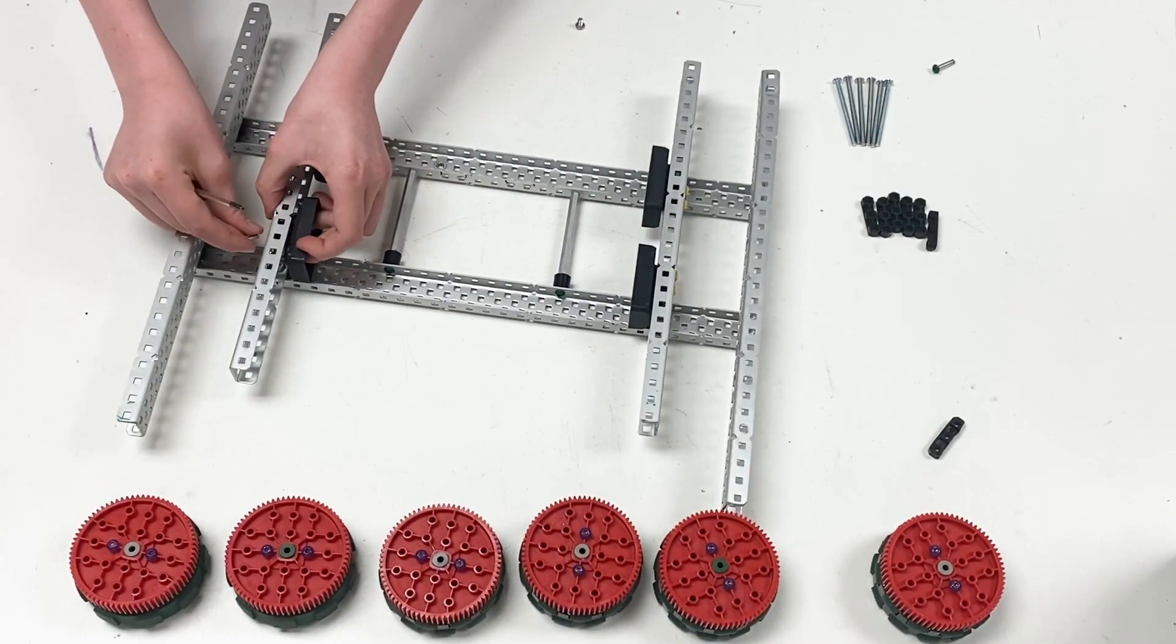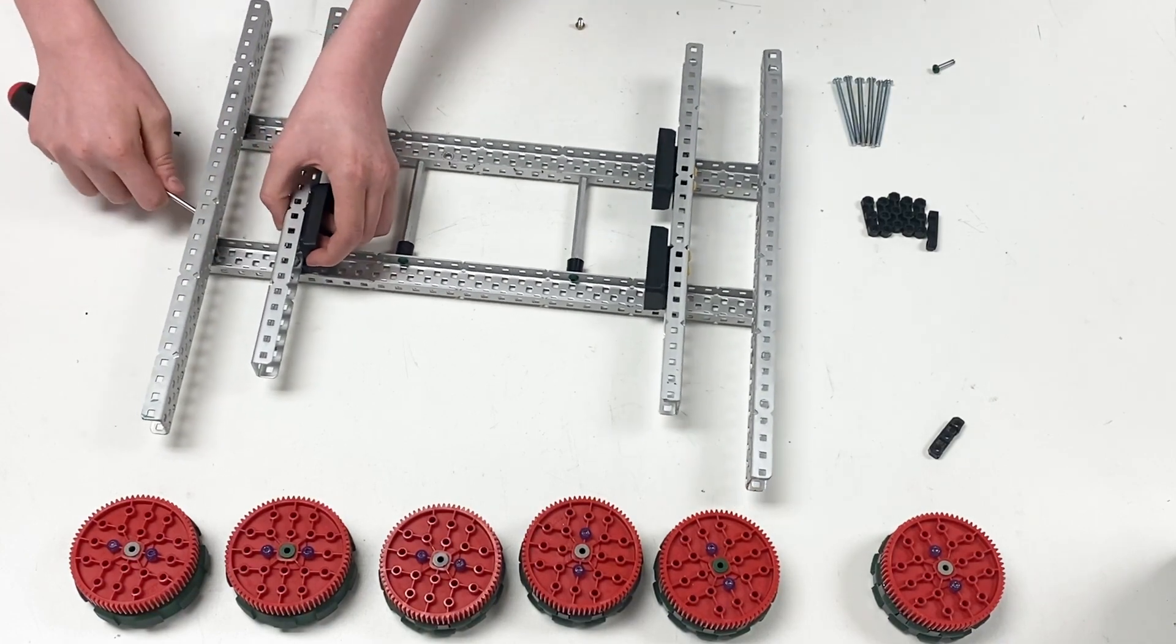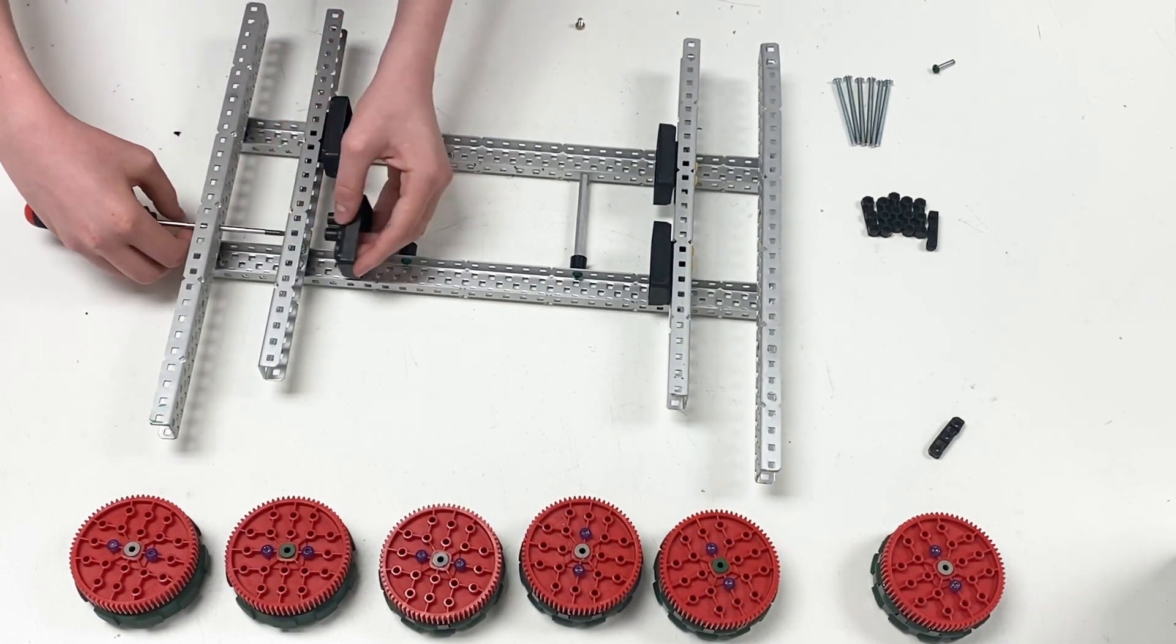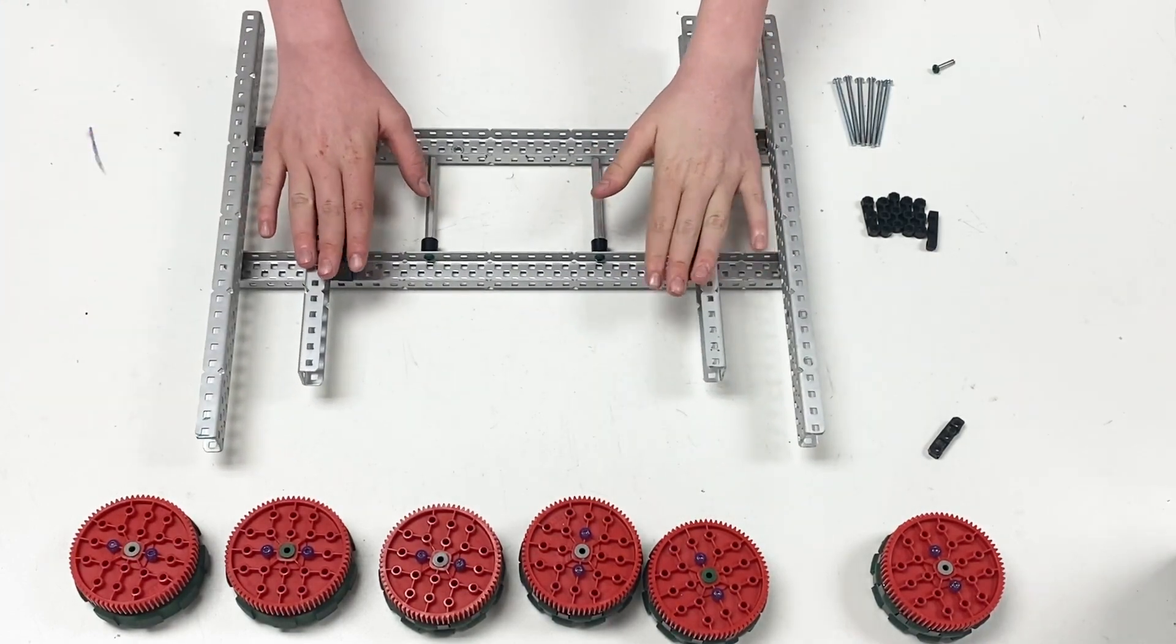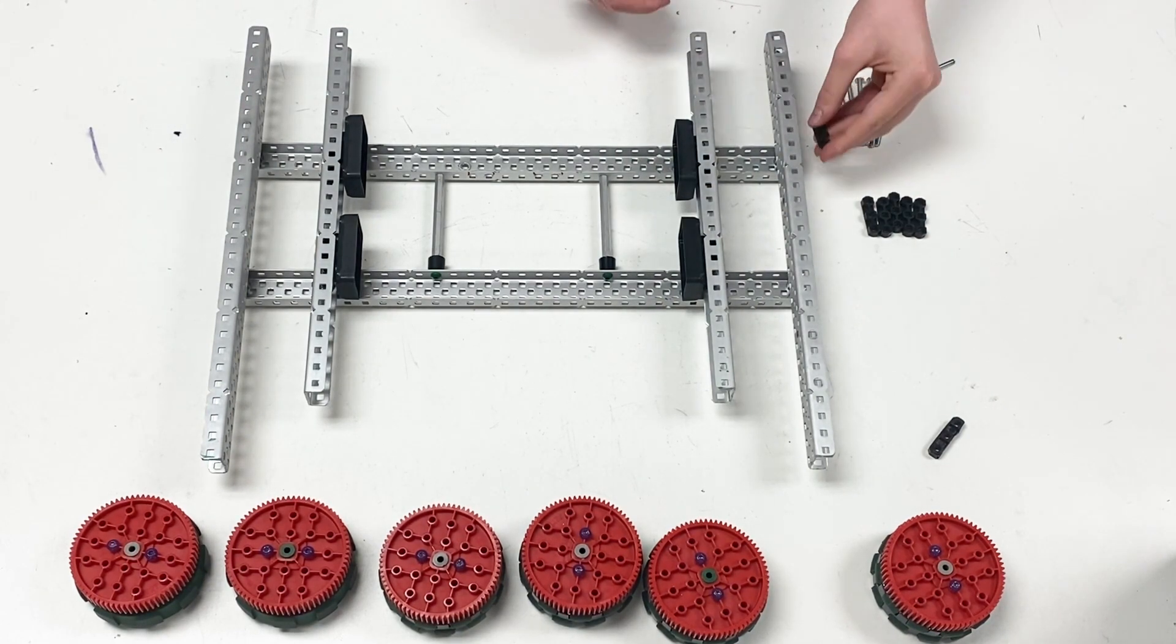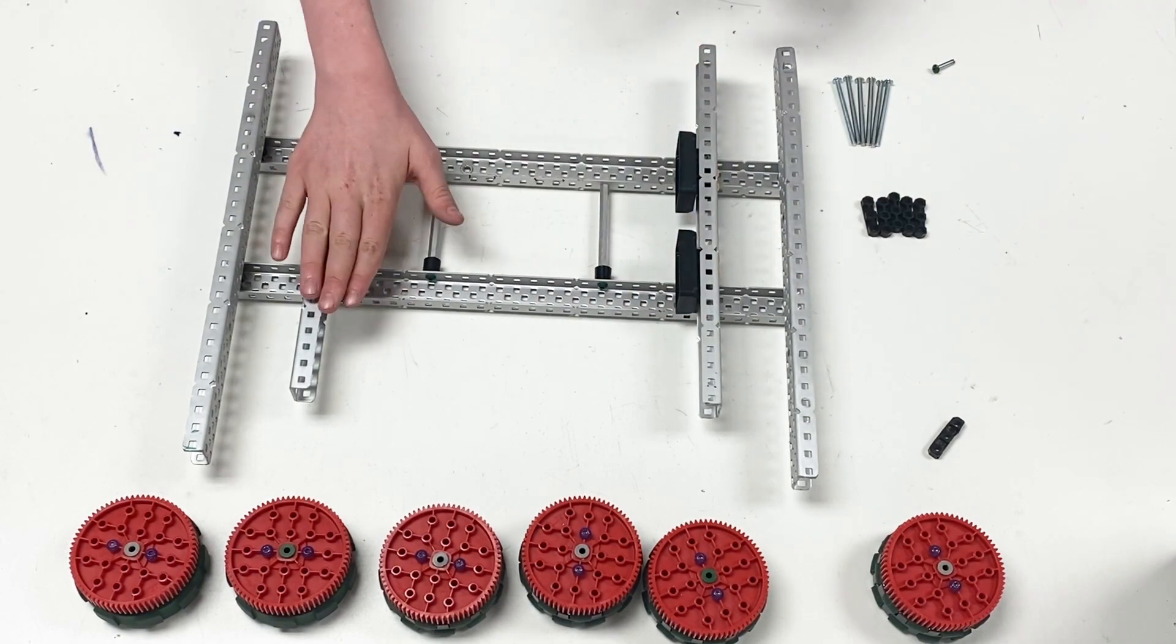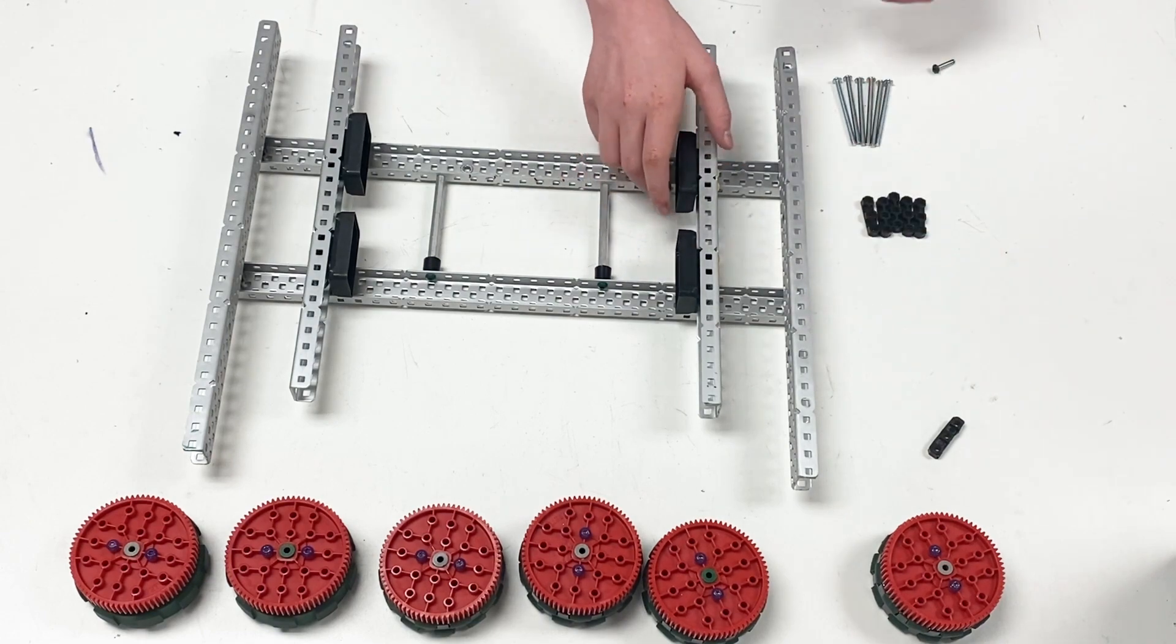When tightening these down, you have to make sure not to tighten them too much or they will strip the motor caps. Now that the motor caps are connected, we're going to add the bearings onto the chassis. Now these special bearings do not go into these since they are in the middle holes. These go into the bottom holes.